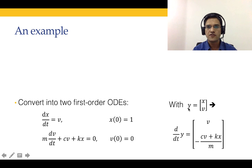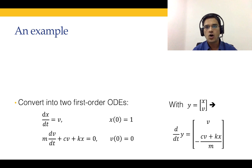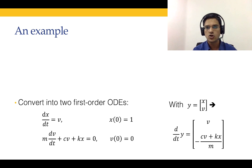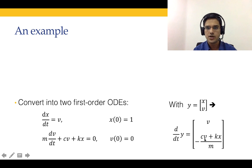We define our vector y as [x; v], as column vectors throughout this course — n rows and a single column. With two variables we have two rows and one column. So dy/dt has first component v and second component -(c·v + k·x)/m. Let us go to MATLAB and try to solve this problem.